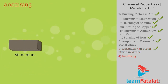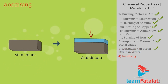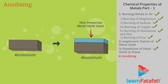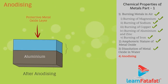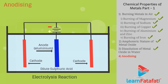Anodizing: Aluminum, if exposed to air, forms a thin oxide layer that protects the metal from further corrosion. With anodizing, this thin oxide layer can be made thicker to help avoid corrosion. In this process, a clean aluminum article is made the anode and is electrolyzed with dilute sulphuric acid.